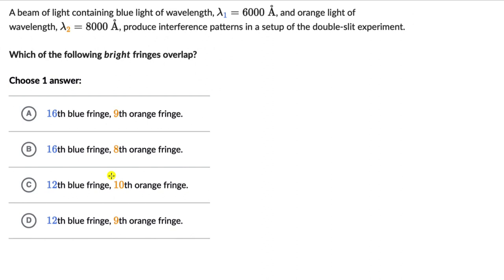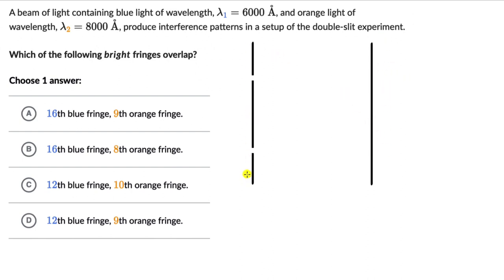Before I get into this, why don't you pause the video and try this one on your own. Now let's break down this question. We have the screen and the plane of the slits. Both the blue and the orange light get diffracted from the two slits and produce an interference pattern on the screen. There will be places where there is a bright blue fringe and also places where there is a bright orange fringe, and some of those fringes might overlap. The goal is to figure out which bright fringes overlap.